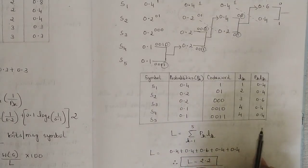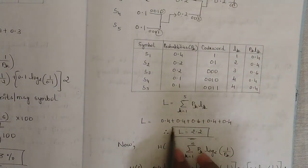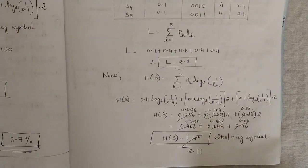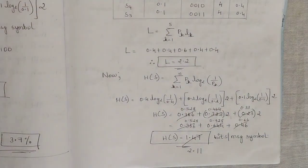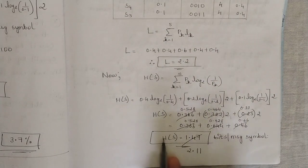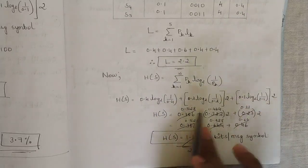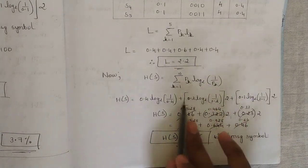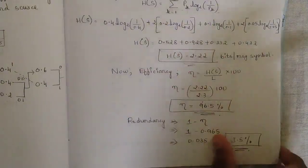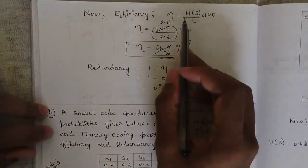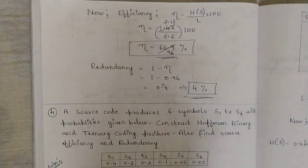Write the length of each codeword and pk×lk, then add all values to get the average length: 2.2. The entropy H(S) = summation of pk × log₂(1/pk) for k=1 to 5. Solving separately for each term gives 2.11 bits per message symbol. Efficiency η = H(S)/L × 100 = 2.11/2.2 × 100 ≈ 95.9%. Redundancy = 4%.